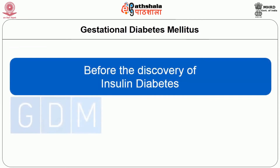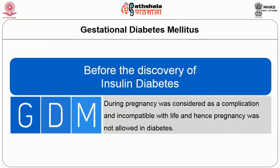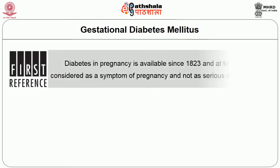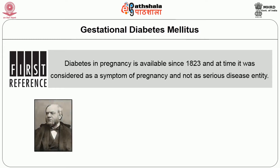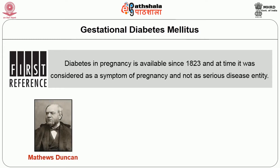Let us know the past history about GDM. In earlier days before the discovery of insulin, diabetes during pregnancy was considered as a complication and incompatible with life, and hence pregnancy was not allowed in diabetes. The first reference to diabetes in pregnancy is available since 1823, and at that time it was considered as a symptom of pregnancy and not as a serious disease entity. In 1882, Matthews Duncan, an obstetrician from London, observed a few salient features of diabetes and focused this to the world.